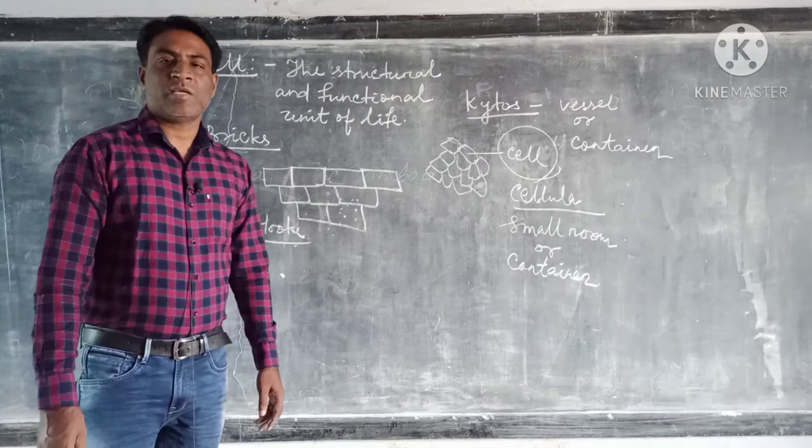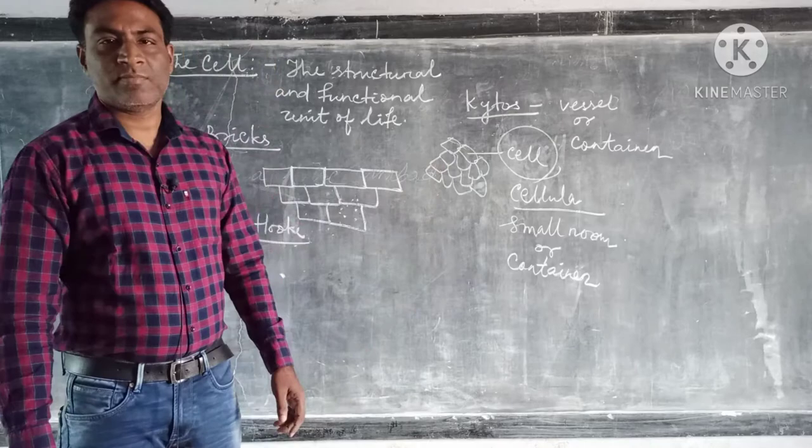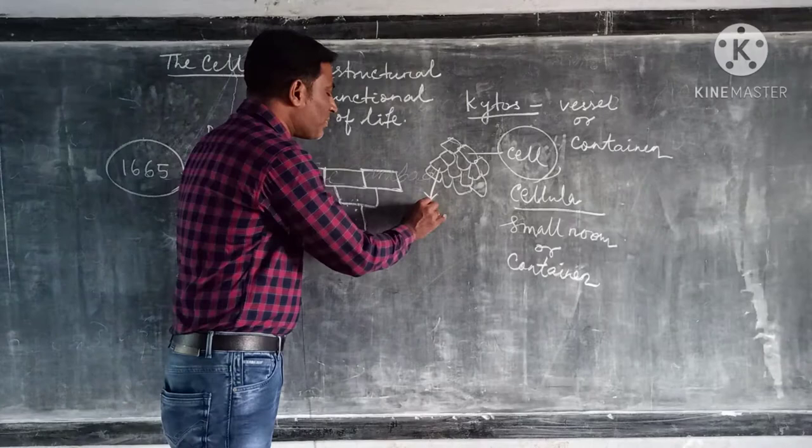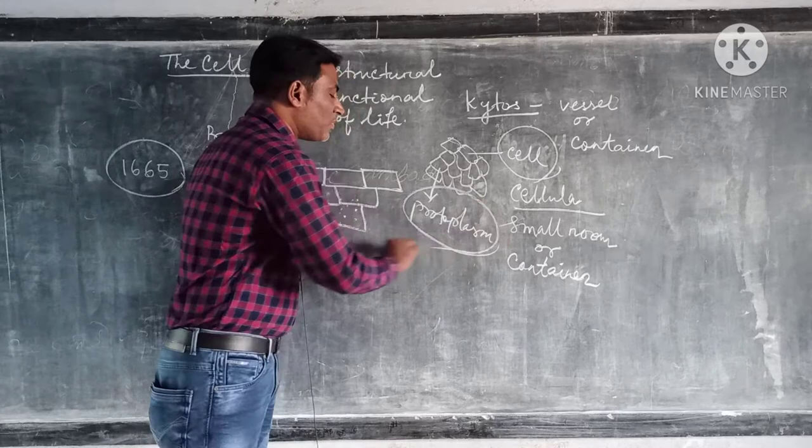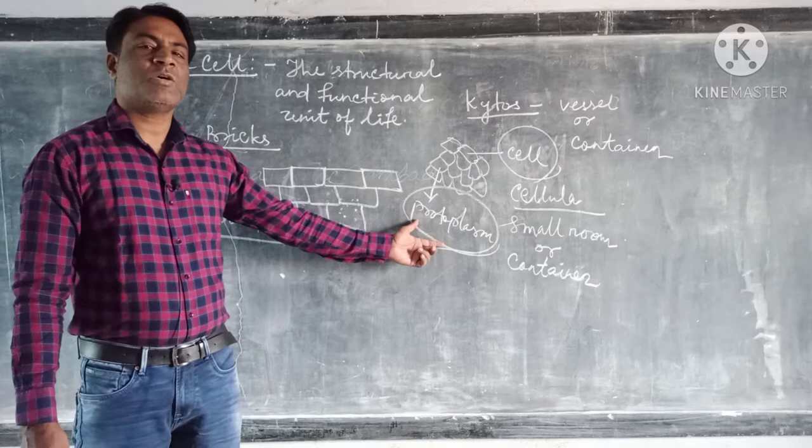Robert Hooke discovered cell. The cell which was discovered by Robert Hooke, it was dead cell. It was dead because it is lack of protoplasm, the living material. We know the living material is protoplasm.